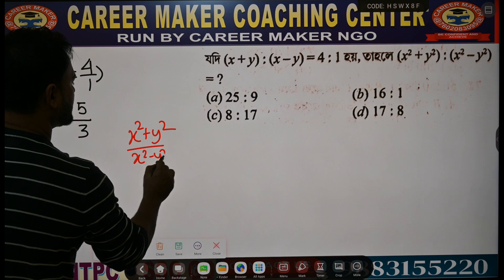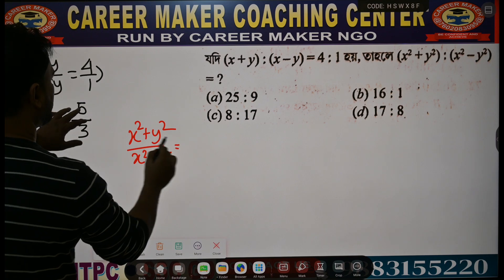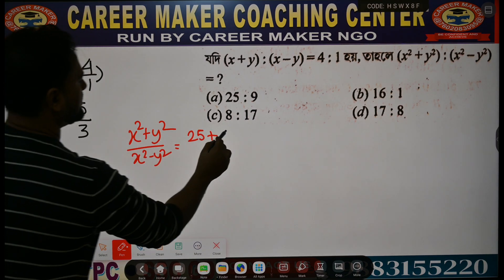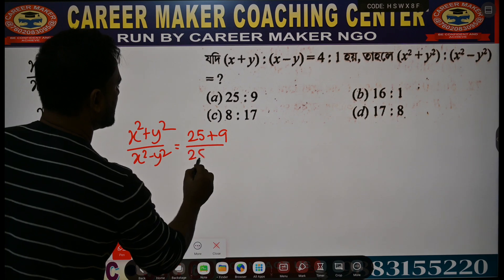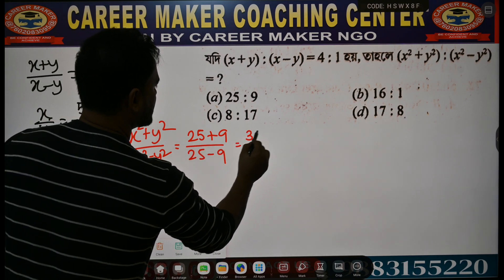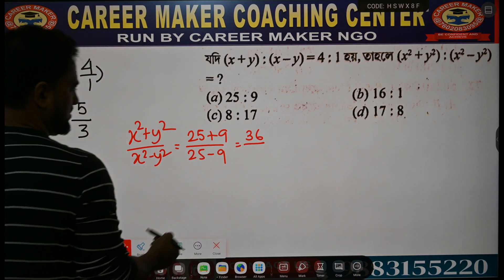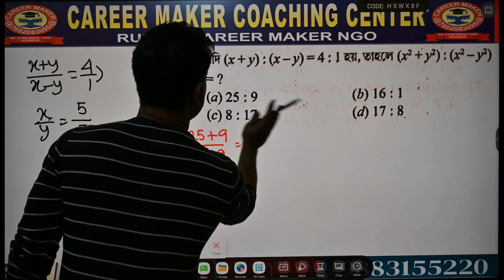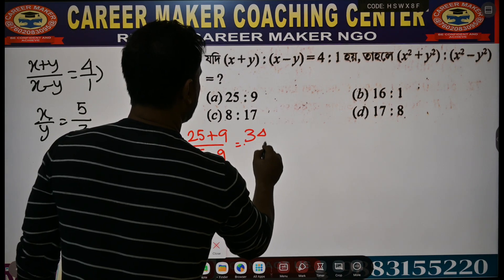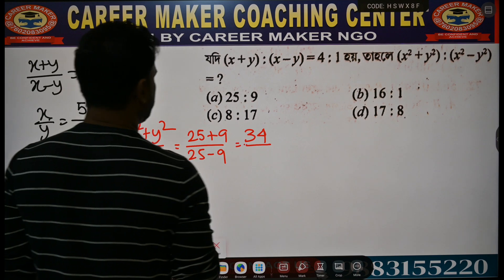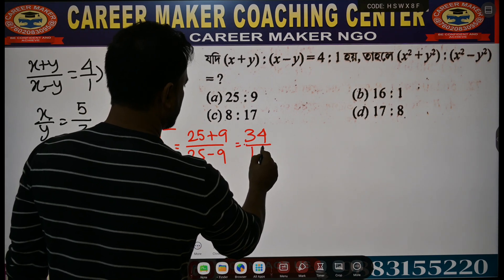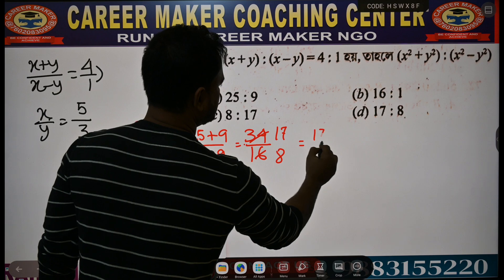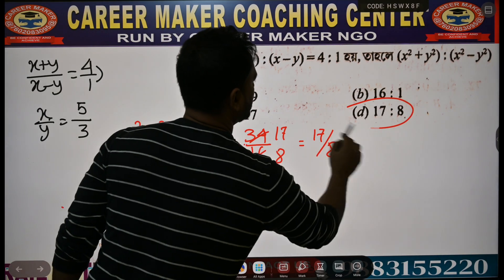Next: find by x square minus y square. x square means 5 squared = 25. And 3 squared = 9. So 35 minus 9 = 36 by 16, which simplifies to 34 by 16, giving 37 by 8. Answer: D has 4.